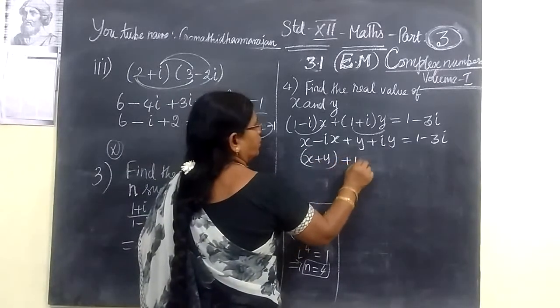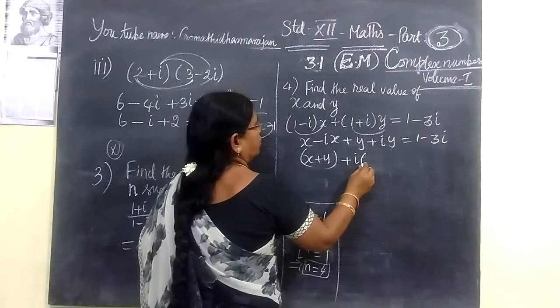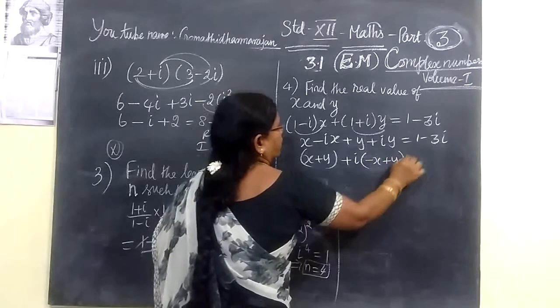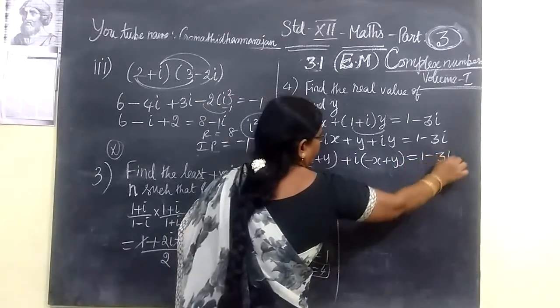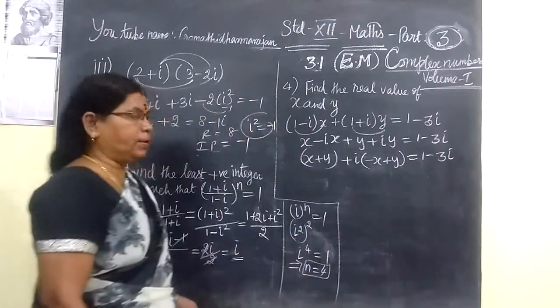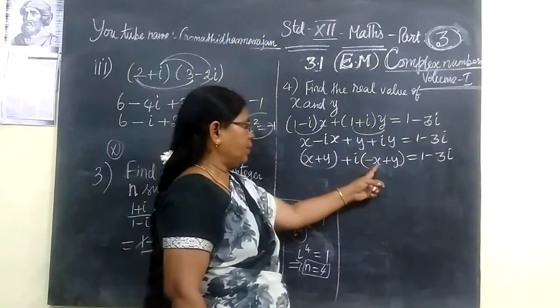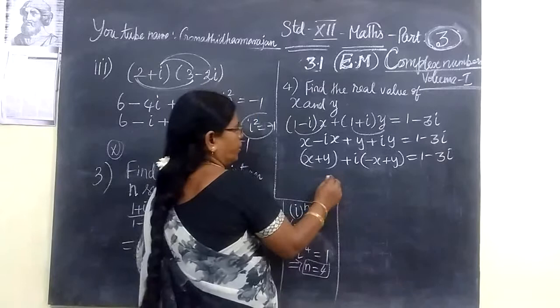For that, you take i outside. Then you can write -x + y. So this is equal to 1 - 3i. That is the identity formula. You can write -x + y.